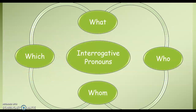Let's recap. Today, you have learned about four interrogative pronouns. 今天我们学的是四个的疑问词。 We have what — to show things. Who — to show people. Whom — is for people, but we use it to ask for the object pronoun. And which — we can use it for people, things, and animals, and mostly when you are given a choice.